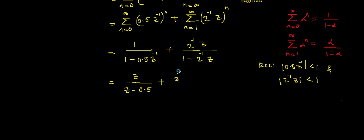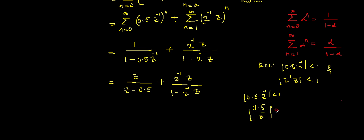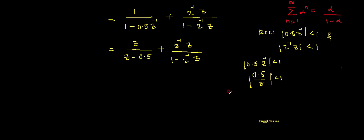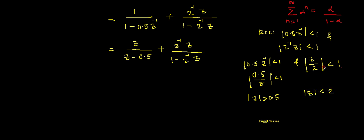For the ROC: with respect to the first term, 0.5 divided by z must be less than one, so taking z to the right-hand side gives mod z greater than 0.5. Similarly, with respect to the second term, z divided by 2 must be less than one, therefore mod z must be less than 2. So the combined ROC is 0.5 < |z| < 2. This is the final result for X(z).